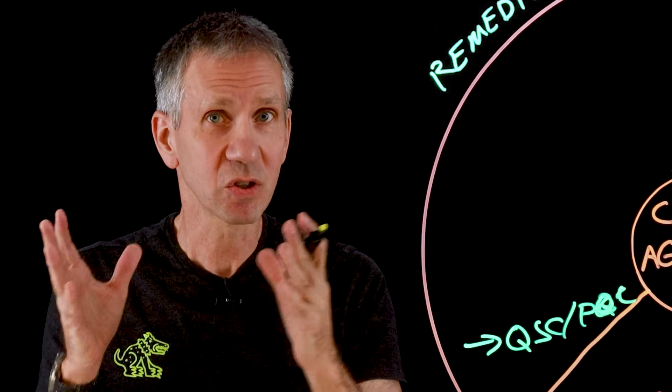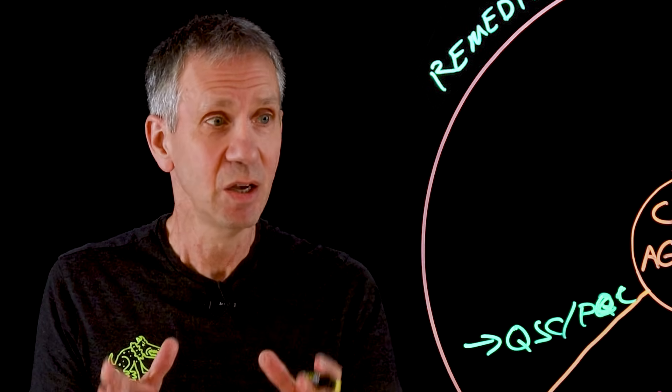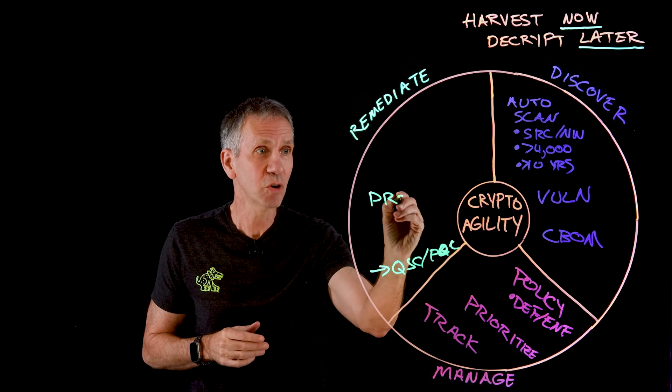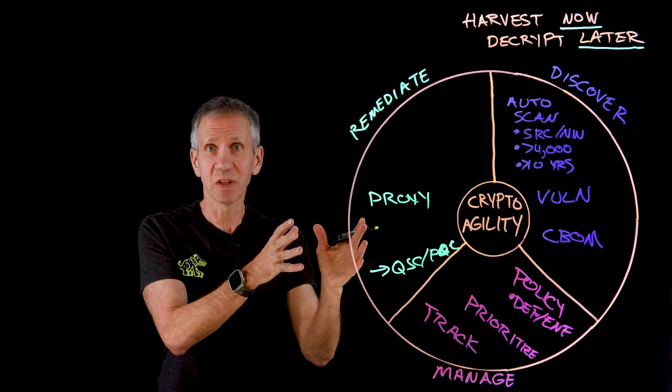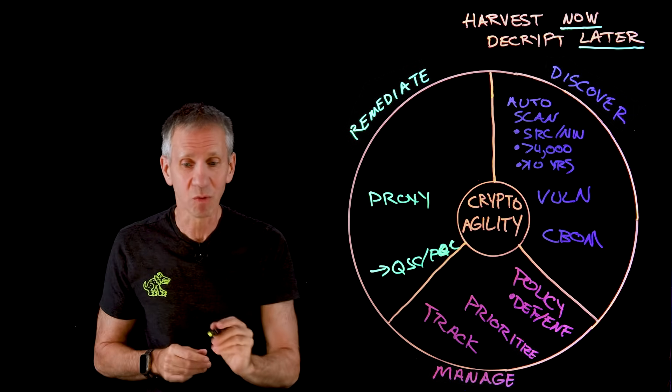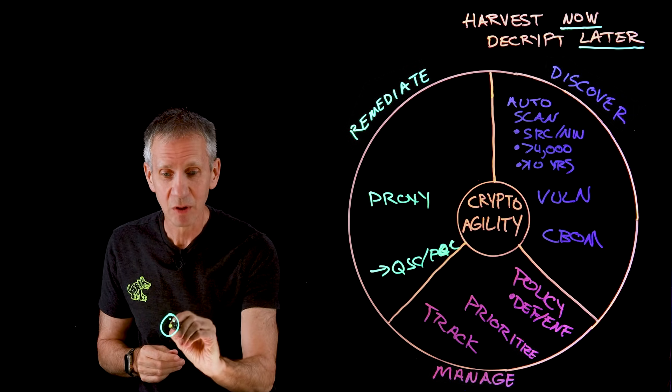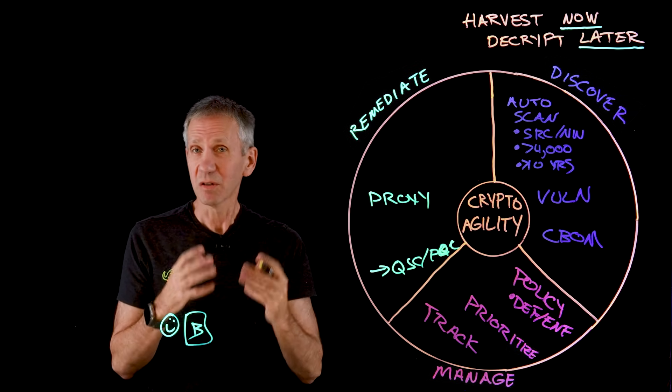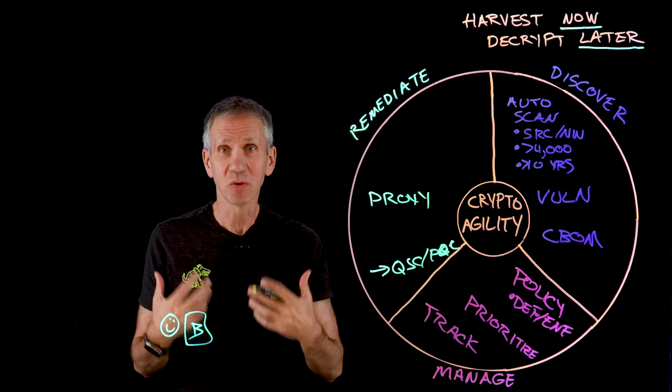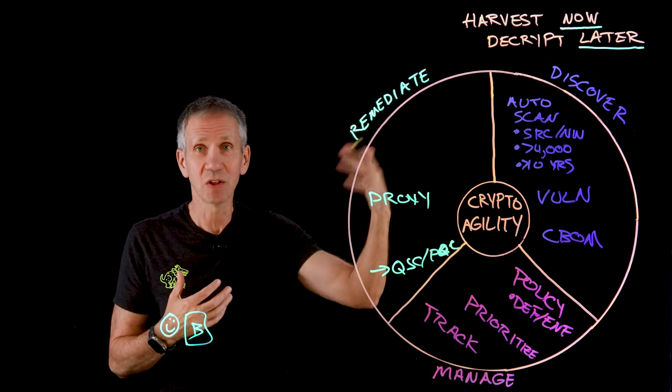Well, one thing that would give some level of protection today would be to use a proxy, a crypto proxy that sits in and does some of this conversion for me. Now here's how it would work. Let's say we have a user who out here is on a browser. And their browser, let's say it's already been updated to be crypto-safe. It's using one of these new algorithms.